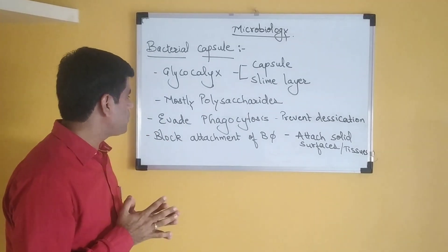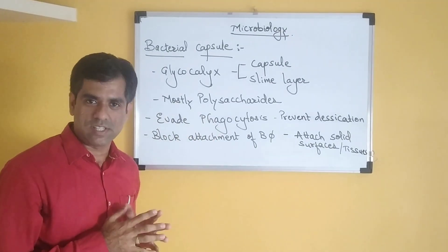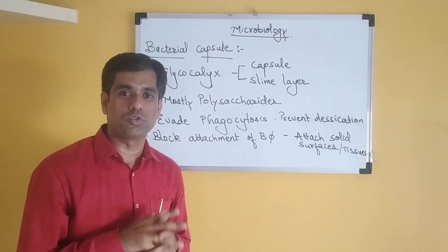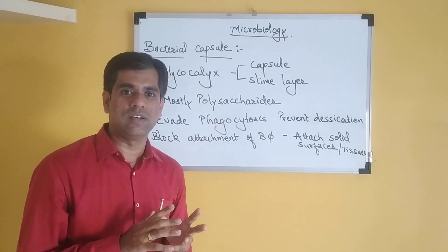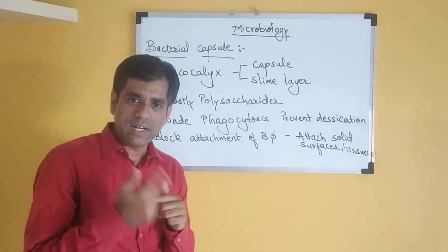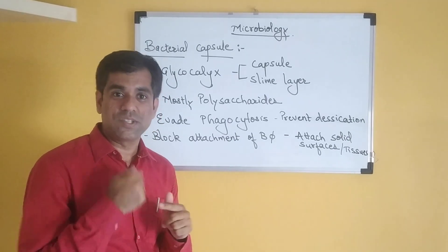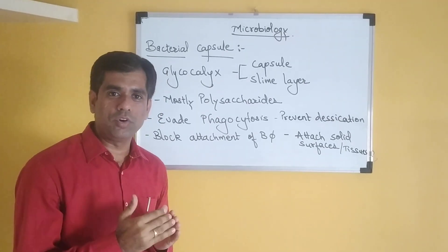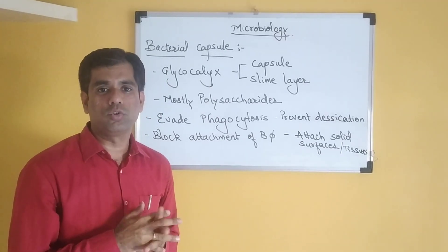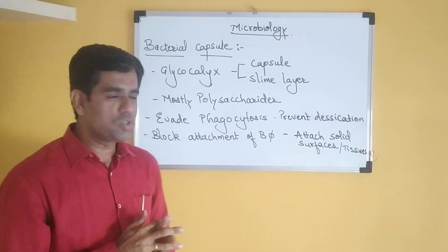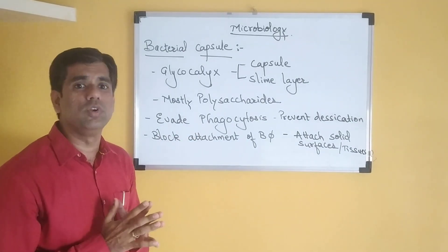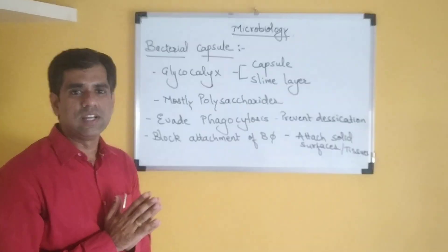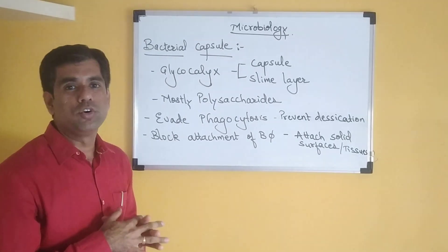This particular capsule helps the organism to evade phagocytosis. You may recall this from Griffith's experiment, where two strains of Streptococcus were used — the S strain and the R strain. The capsulated S strain, referred to as the smooth strain, evades the phagocytosis of the host cell — the defense mechanism — and therefore causes disease. So this particular capsule helps to evade phagocytosis, giving the bacterium more ability to cause disease.